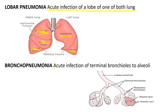Bronchopneumonia is acute infection of terminal bronchioles to the alveoli. Whenever there is acute infection in terminal bronchioles — as we can see in this diagram, this is where the terminal bronchioles start — from the terminal bronchioles onward, if there is an infection, it is known as bronchopneumonia. This is the main difference between lobar pneumonia and bronchopneumonia.